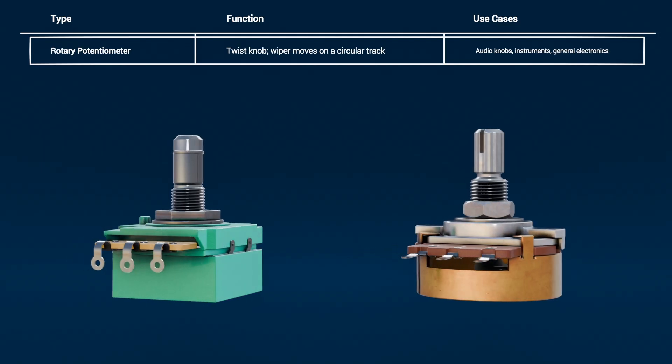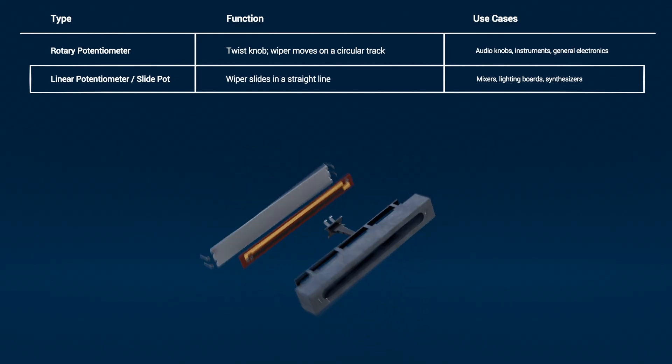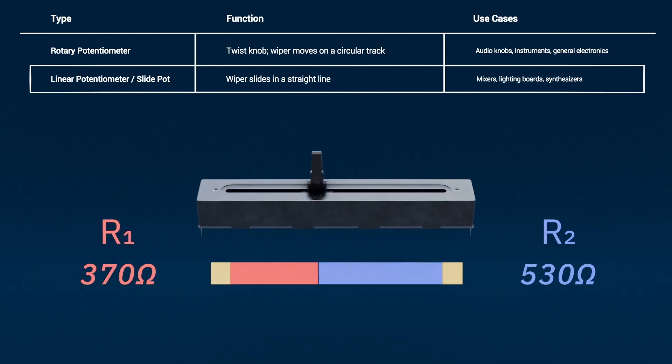Linear potentiometer, also known as slide pot. Instead of rotating, the wiper slides along a straight track. You'll see these in mixing desks, lighting controllers, and synthesizers. Ideal for intuitive linear adjustments.